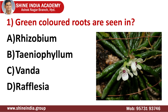The first question is: green colored roots are seen in which plant? As you can see in the picture, the roots are very green in color. The answer is Taeniophyllum, commonly known as ribbon roots. It is a genus of about 240 species of orchid family. Plants are more or less leafless with a very short stem and roots that are often flat, green and photosynthetic in nature. That is the specialty of this Taeniophyllum plant.